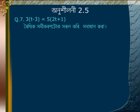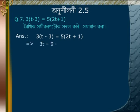Problem 7: Solve 3(t minus 3) is equal to 5(2t plus 1). Expanding brackets: 3t minus 9 is equal to 10t plus 5.